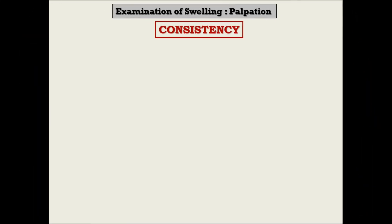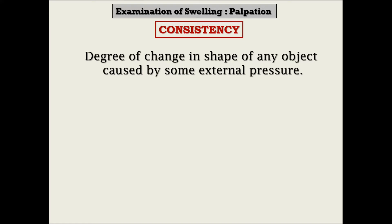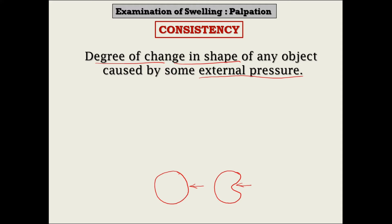After surface and margin, the next interesting feature in palpation is consistency. In terms of physics, consistency can be defined as the degree of change in shape of any object caused by some external pressure. For example, if I apply pressure at one point on a spherical ball and the shape changes, the degree to which the shape is changed determines the consistency of that object.